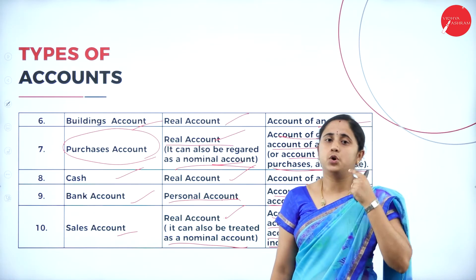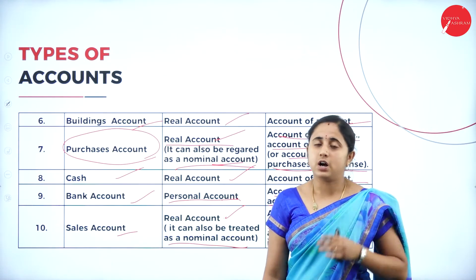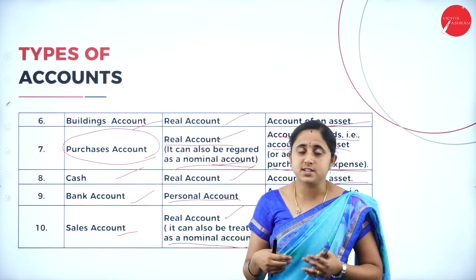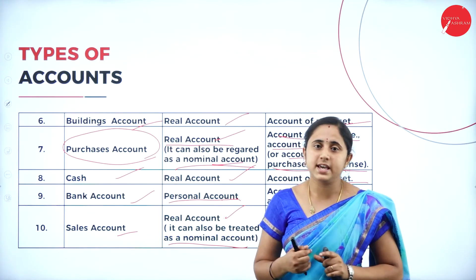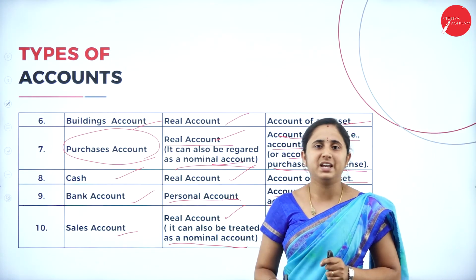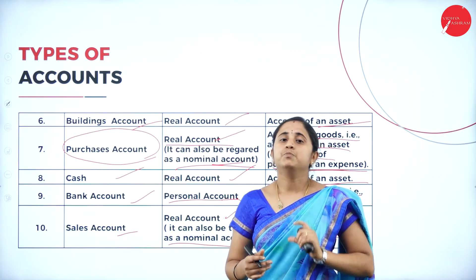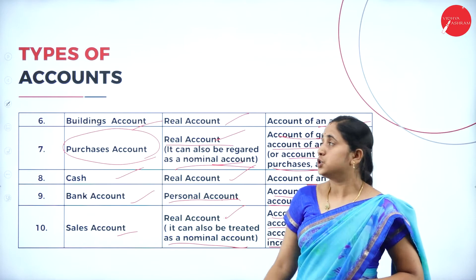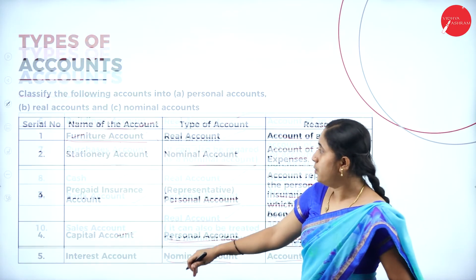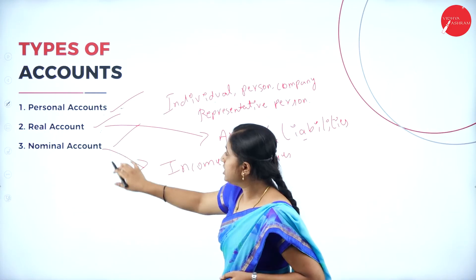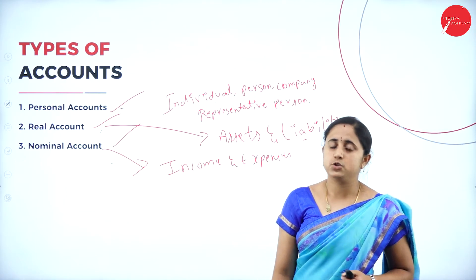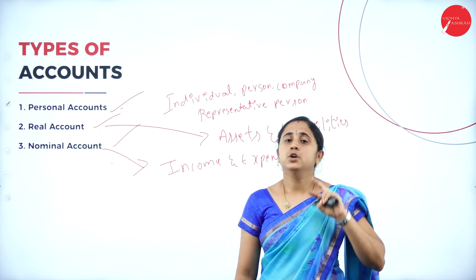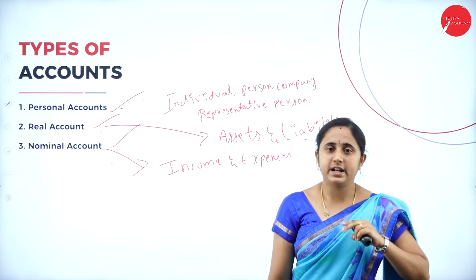Next, golden rules of accounting. You have a rule for debit and credit. In the accounting concepts, I explained the dual aspect concept — record both accounts: one must be a receiver and one must be a giver, that is one must be debit and one must be credit. In order to debit and credit, you have a rule — that rule is considered as the golden rule of accounting. The golden rule of accounting is based on the types of accounts: personal account, real account, and nominal account. For each account, you have two rules — one for debit and one for credit.